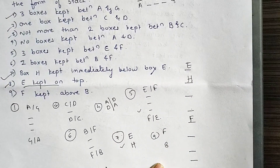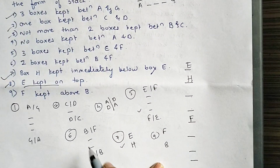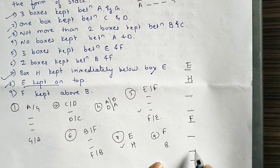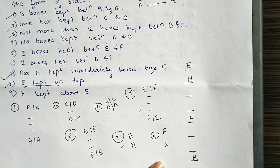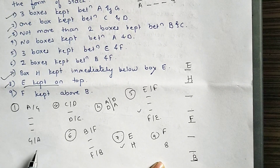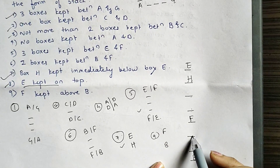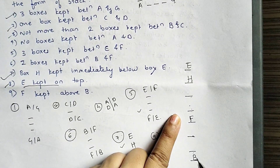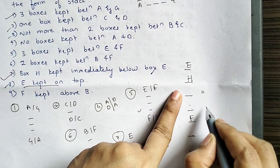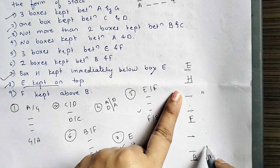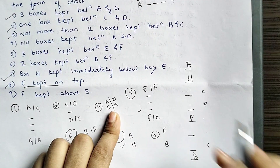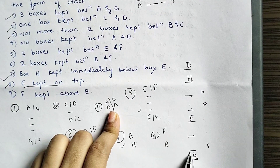F is now placed. Since 2 boxes are kept between B and F, and H is already at position 2, counting 1 and 2 below F places B at position 7 (checking that nothing conflicts). Now for A and G — 3 boxes between them — and A is the immediate neighbor of D. Taking A at a position, 1, 2, 3 gives G below. There are two possible cases for A's placement.